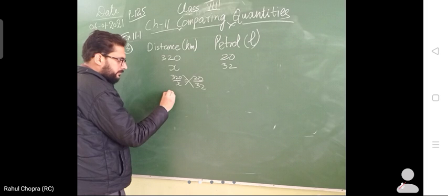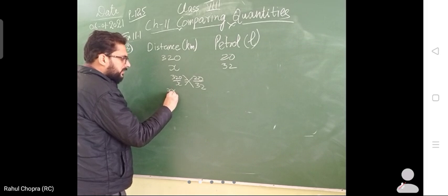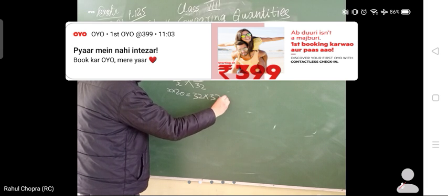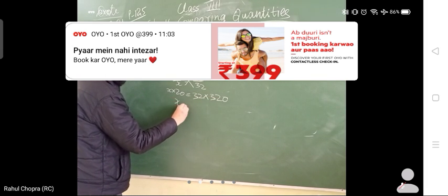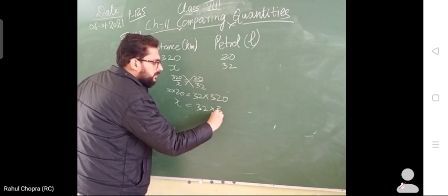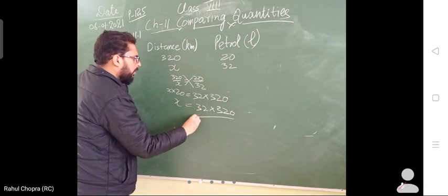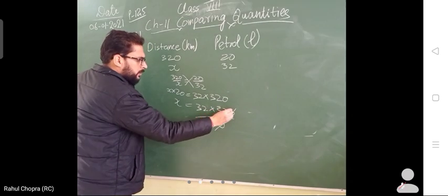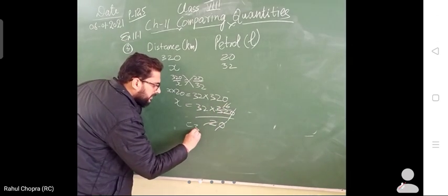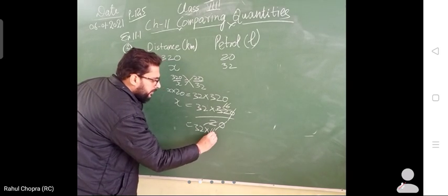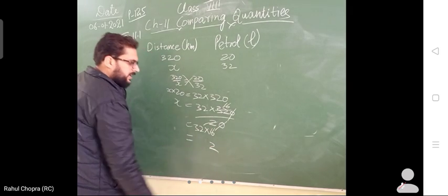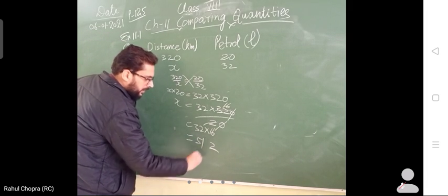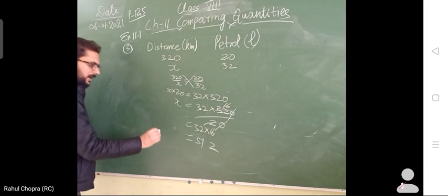Now, do cross multiplication. X into 20 is equal to 32 into 320. It means x is equal to 32 into 320 upon 20. Cancel the zeros, you get 16. Multiply 32 by 16: 16 into 2 is 32, carry 3. 16 into 3 is 48 and 3 is 51. So 512.